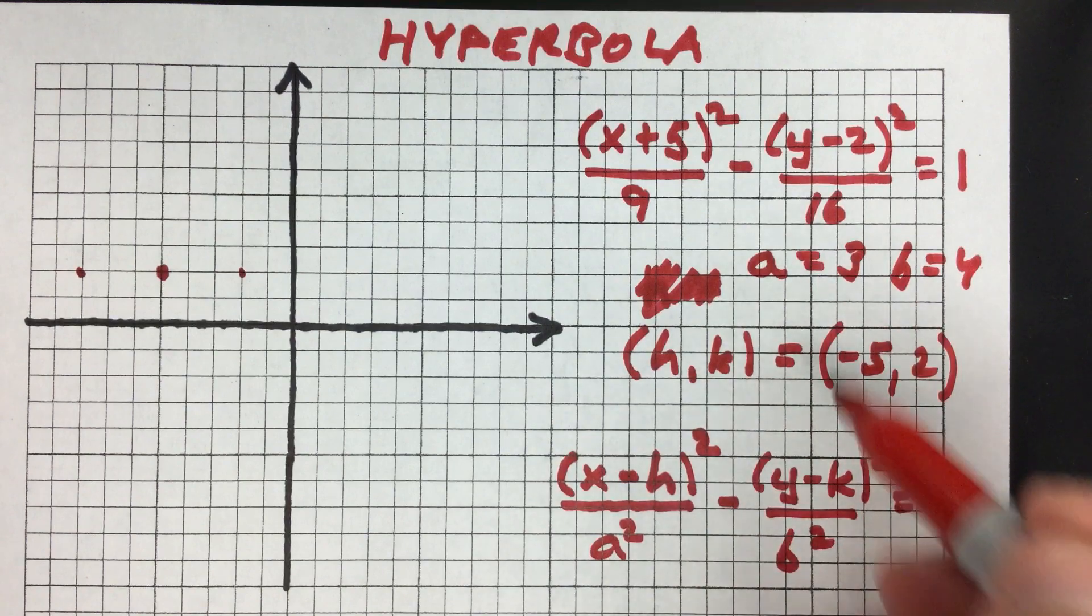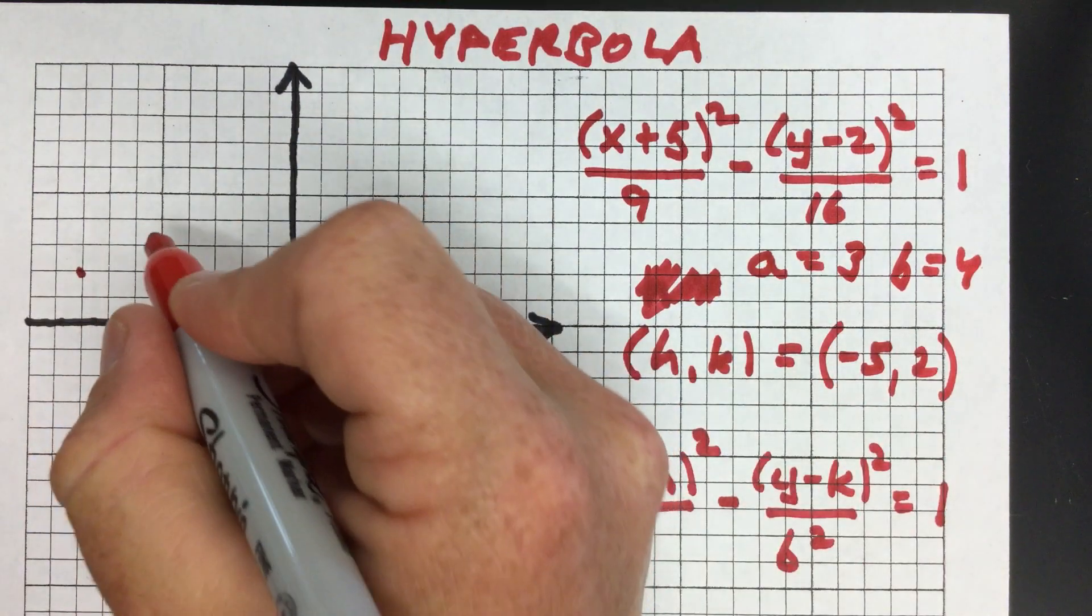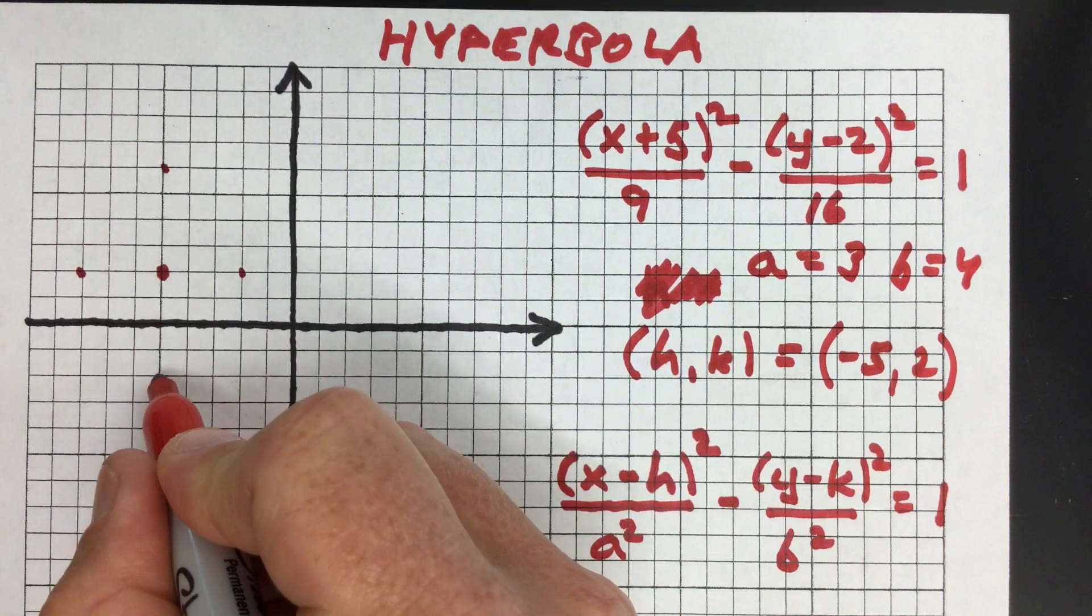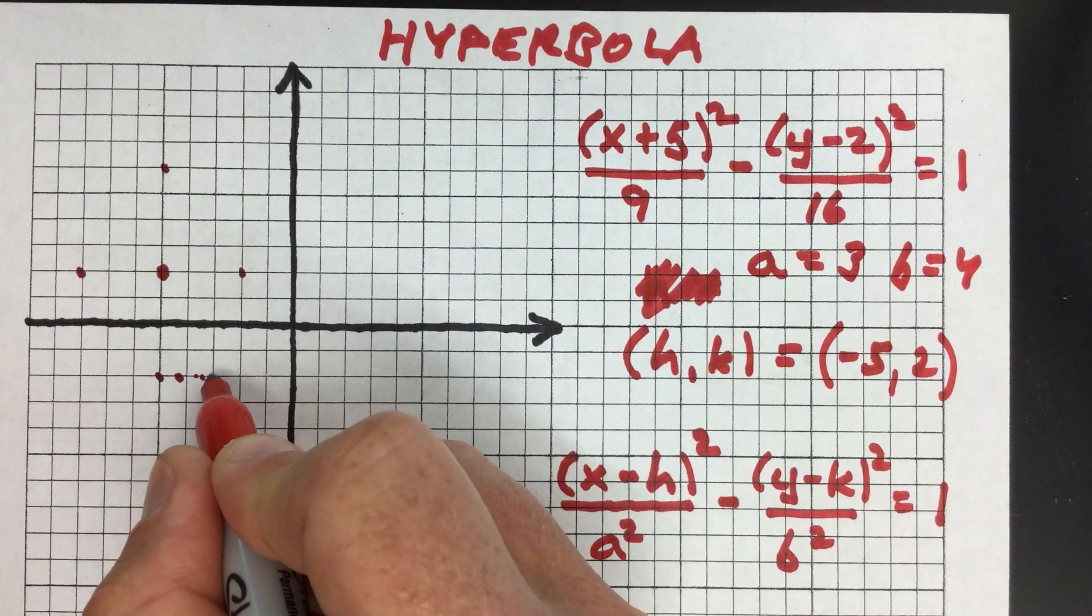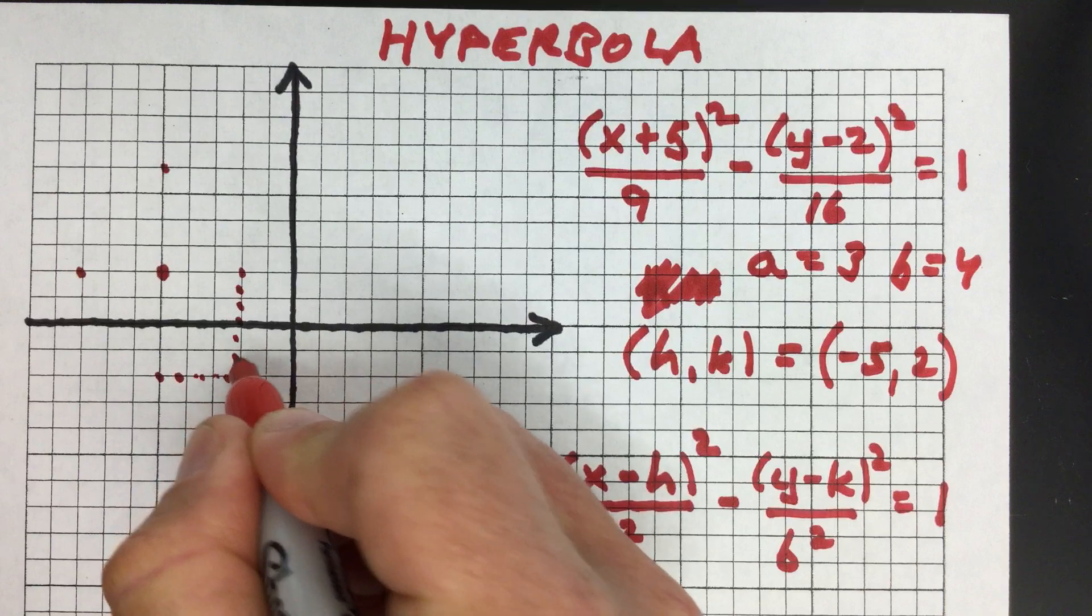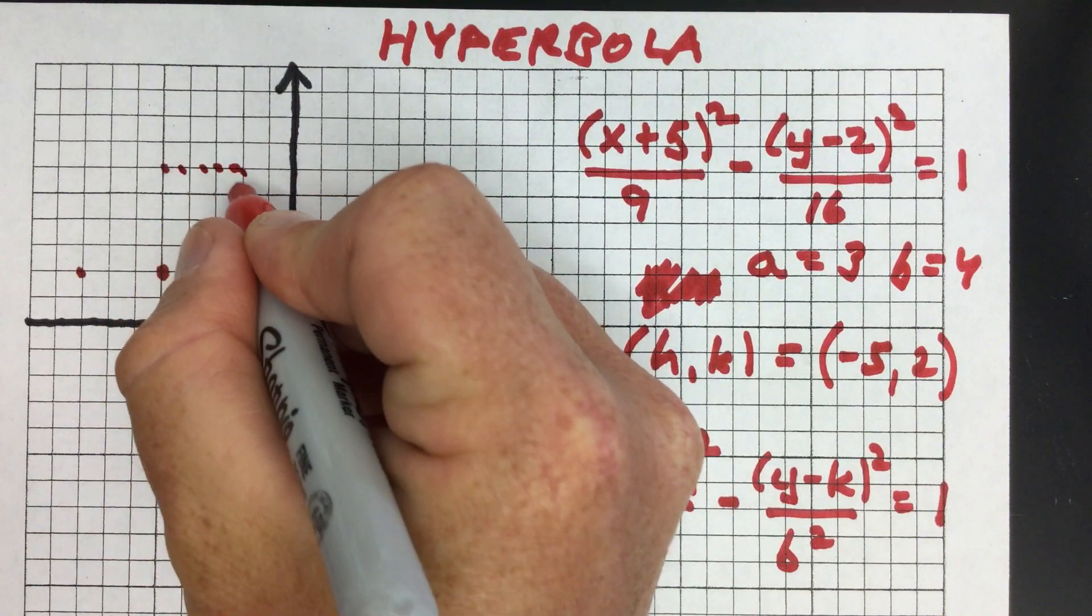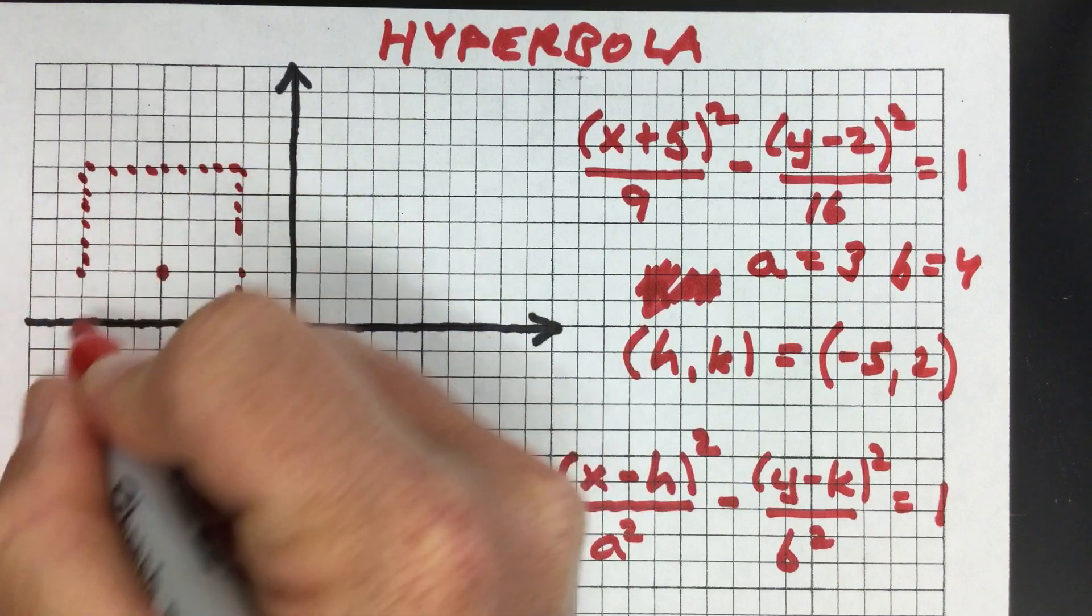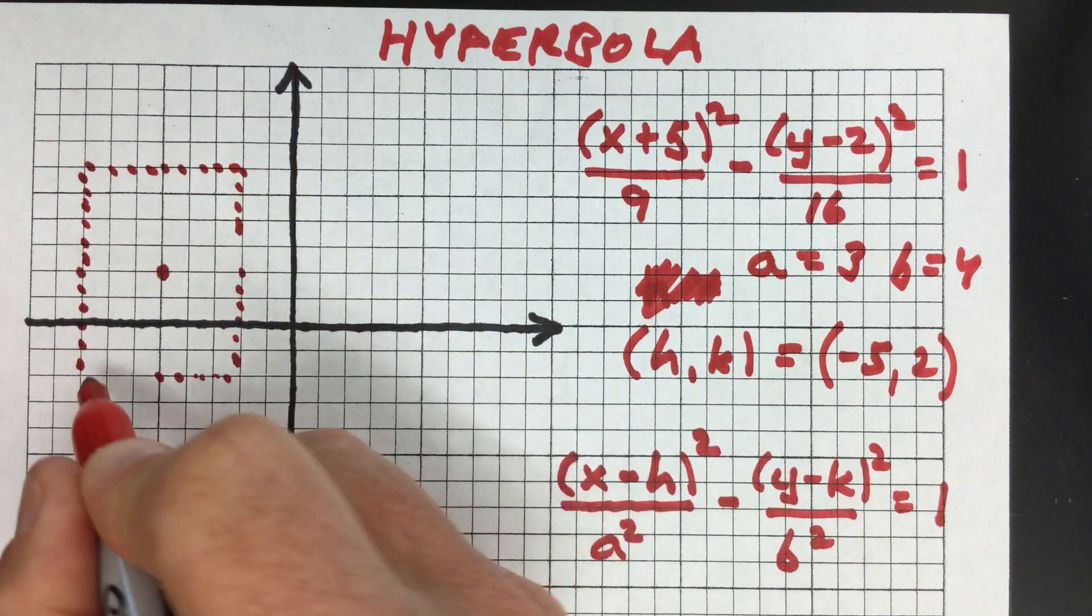And your b value is 4. So that means you go up 4 units this way and this way. And what that does is it defines a little box here that we're going to use to help guide how we plot this hyperbola.